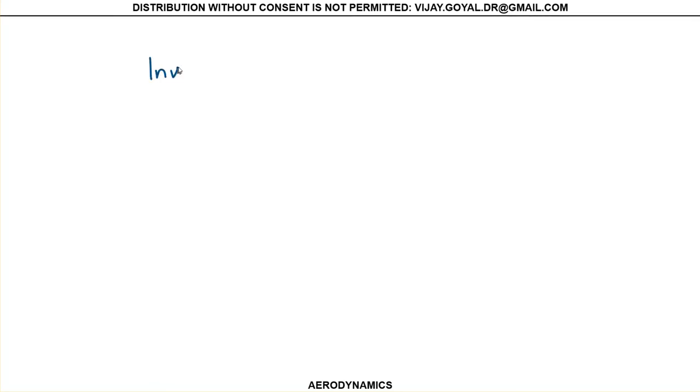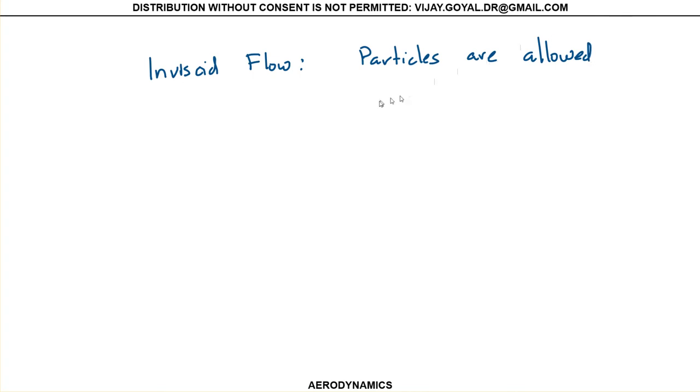Now consider the opposite: the inviscid flow, where particles are allowed to slip. This is a non-slip condition versus an inviscid flow. In the case of inviscid flow, particles are allowed to slip past the wall.